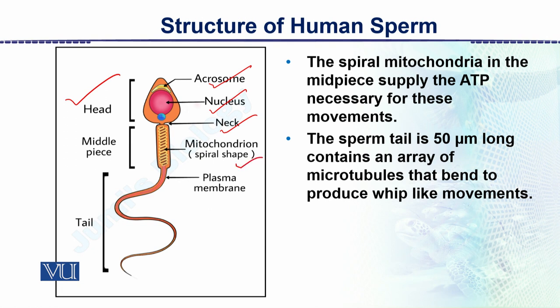Then there is the midpiece, which contains the mitochondria. The energy for the sperm's activity is produced by these mitochondria, after which it extends into a very long tail.